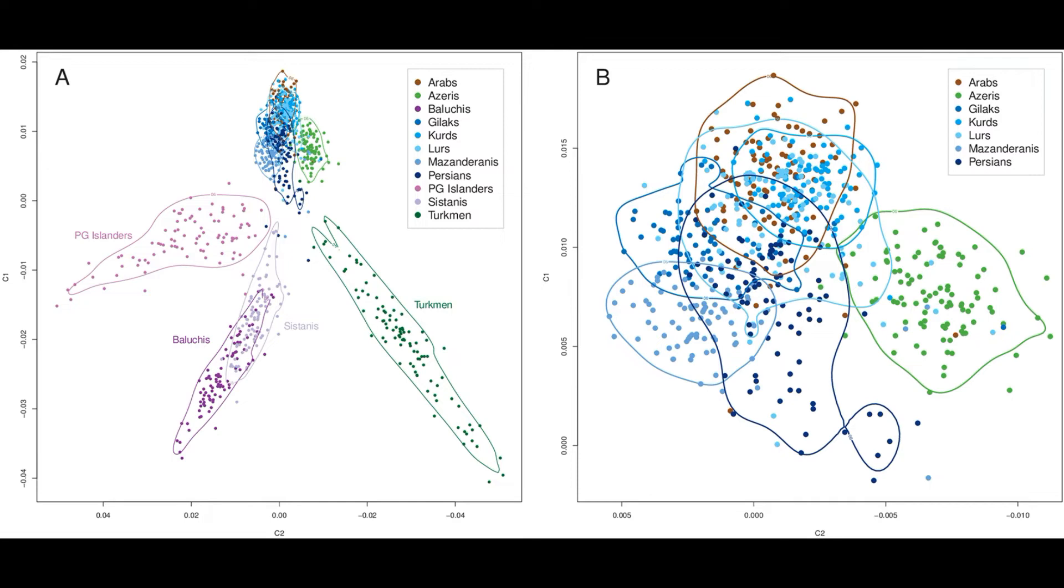The most similar groups which cluster together are the Arabs, the Azeris, the Qizilbash, the Kurds, the Lurs, the Mazandaranis and the Persians.